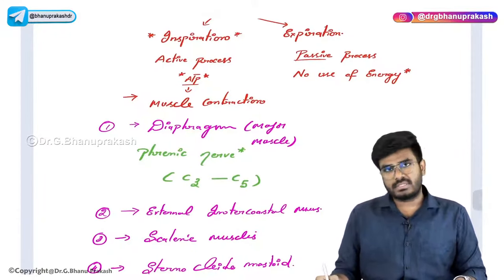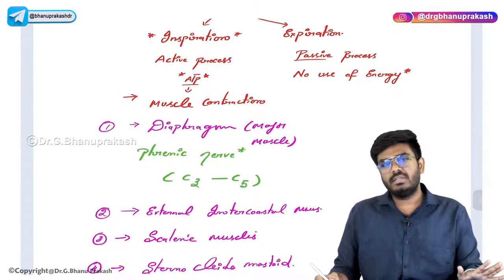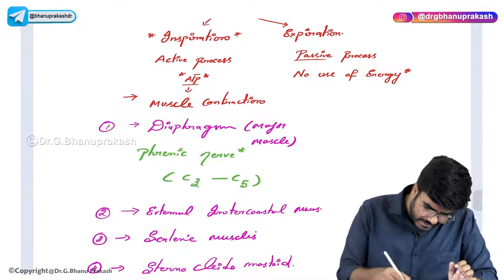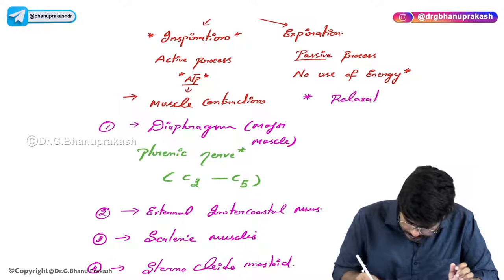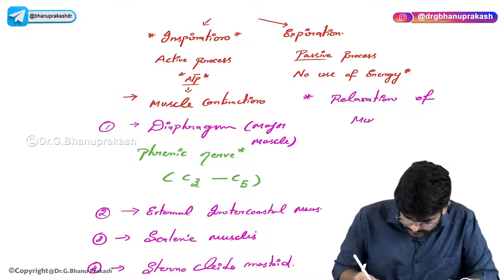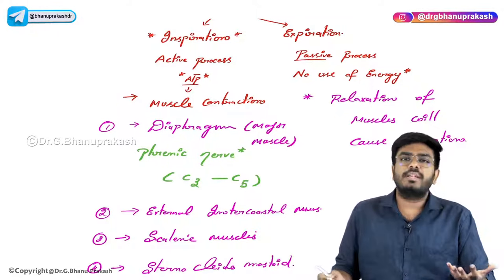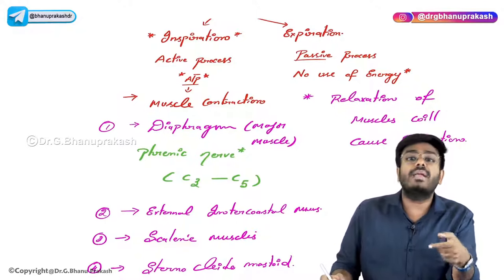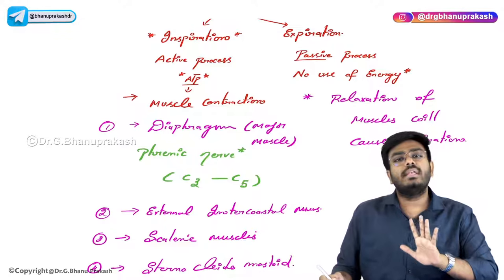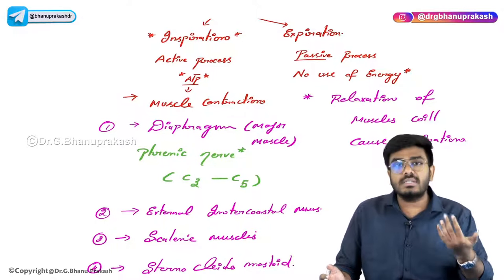What are the muscles involved in expiration? There is no need for any muscle contraction during the process of expiration. Expiration just needs relaxation of muscles. Since expiration is a passive process, muscle contraction shouldn't be there — if there were muscle contraction, ATP would be utilized and it would become an active process. Simple relaxation of the diaphragm and other inspiratory muscles causes expiration.